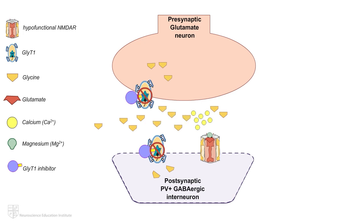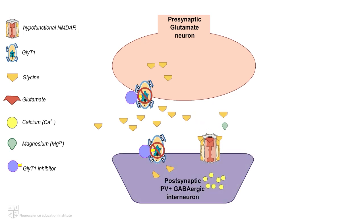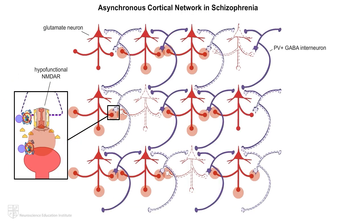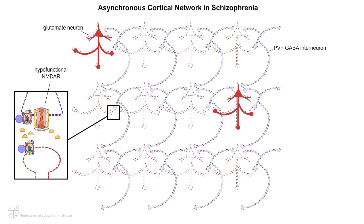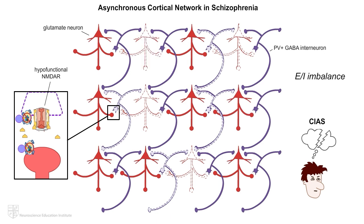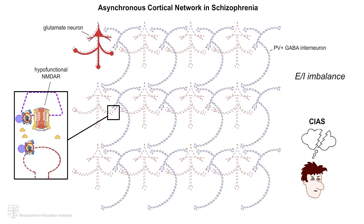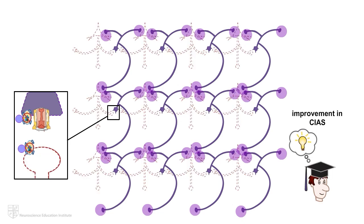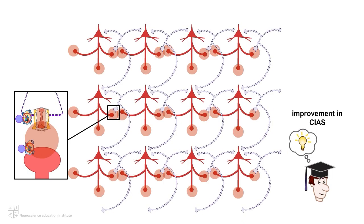With glycine levels at glutamatergic synapses within the cortical network elevated, there is more glycine available to bind in its coagonist capacity at the NR1 subunits in hypofunctional NMDAR located on PV-plus GABAergic interneurons. This will hypothetically improve NMDAR functioning, resulting in activation of the inhibitory PV-plus GABAergic interneurons. As we discussed in Part 2 of this animation series, activation of those PV-plus GABAergic interneurons and subsequent release of inhibitory GABA onto excitatory glutamatergic pyramidal neurons is critical for establishing synchrony and maintaining the EI balance in cortical networks.